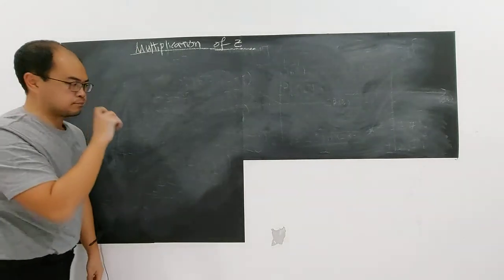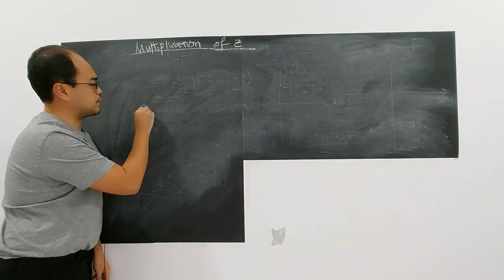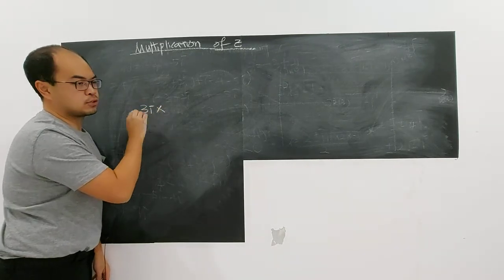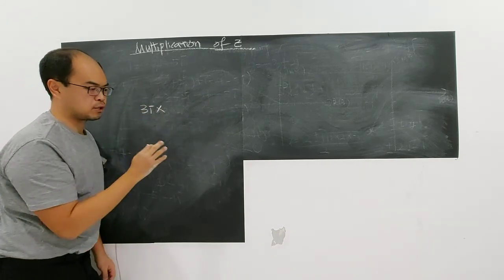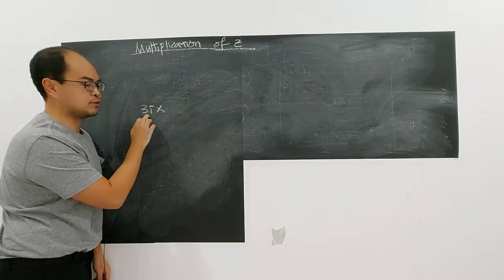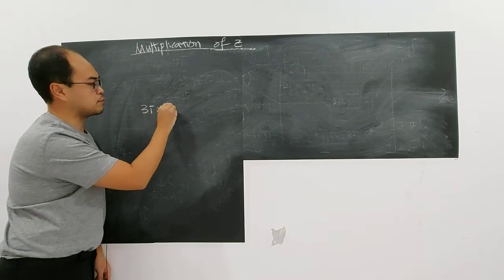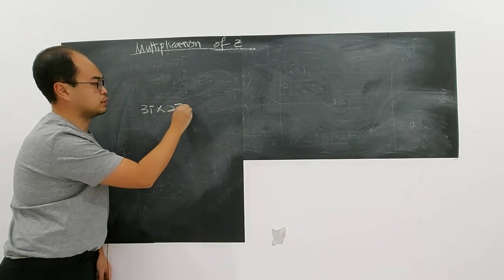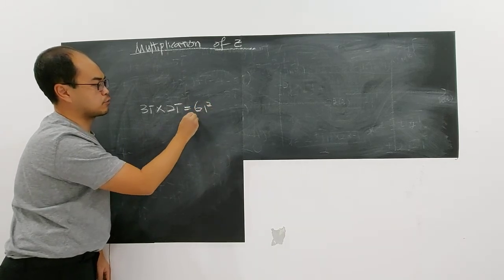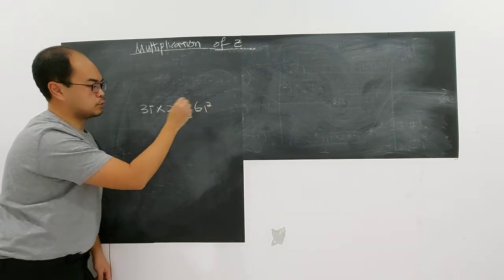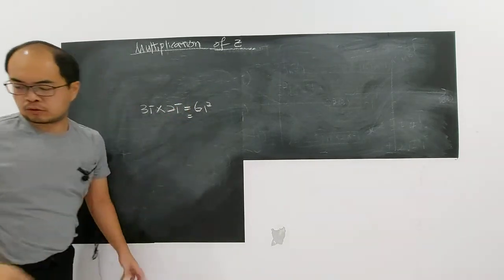Before that, you must know something. Two complex numbers — actually, I don't talk about complex numbers right now; complex must have real and imaginary parts. Now I talk about pure imaginary numbers. When you multiply two pure imaginary numbers, you will get a real number.